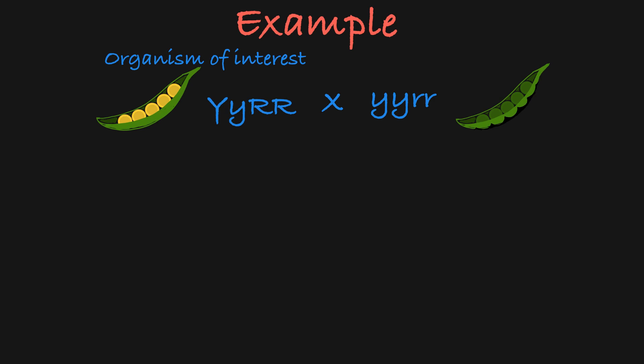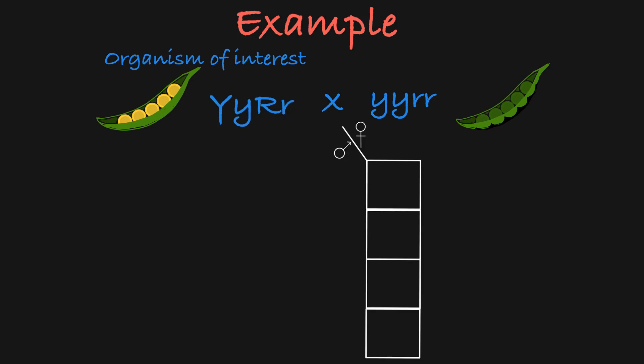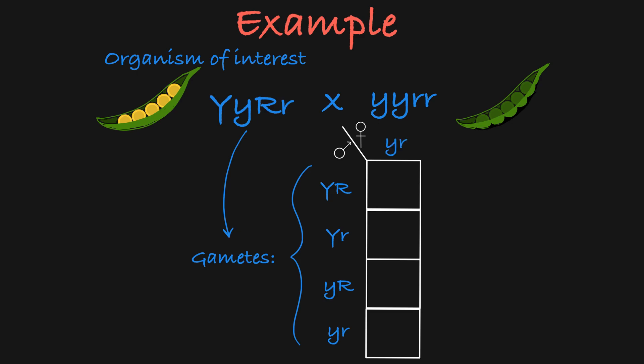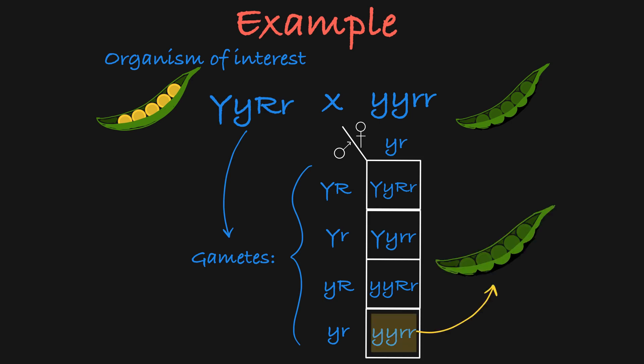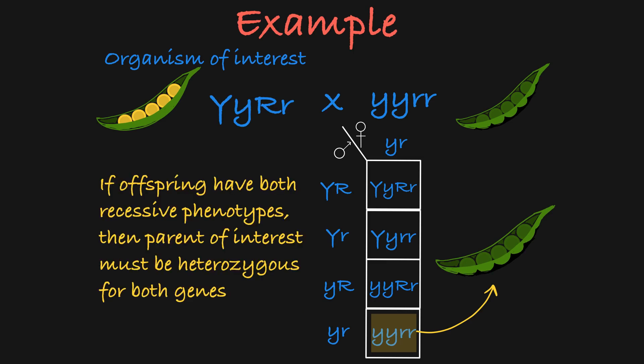Finally, if our parent is heterozygous for both genes, it can produce four different gametes. Crossing to the green pinched plant results in these four possible offspring genotypes. If you see that this yellow round parent can produce green pinched offspring, then you know it must be passing on recessive alleles for both genes and therefore be heterozygous for both genes.